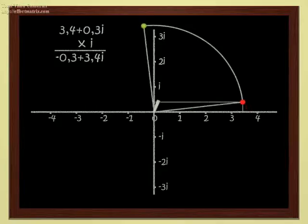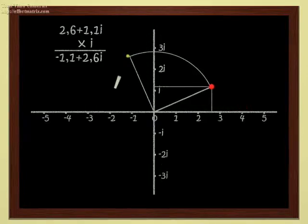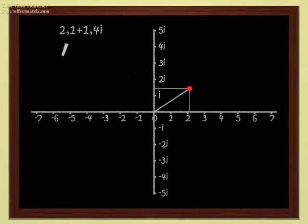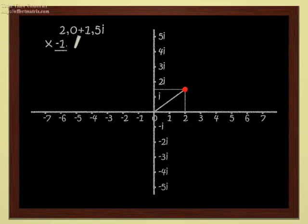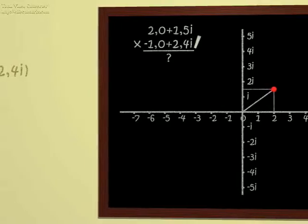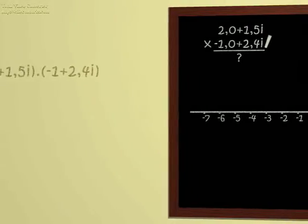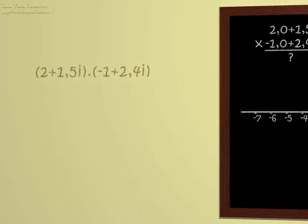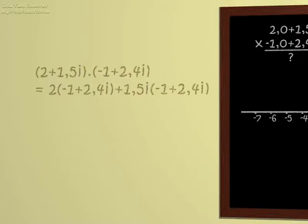And finally, we can multiply any two complex numbers with no problem whatsoever. For instance, let's try to multiply 2 plus 1.5i and 1 plus 2.4i. We proceed as usual. We first multiply by 2, and then by 1.5i, and we add the results. Therefore, we get...